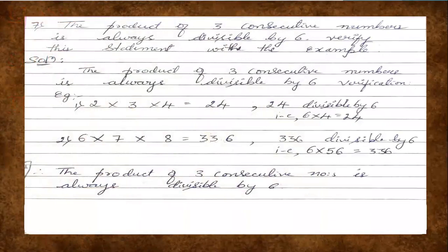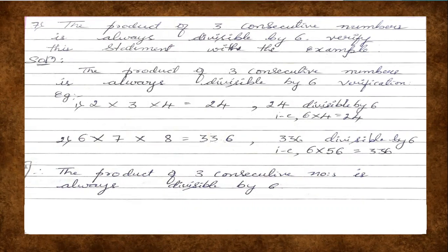The product of three consecutive numbers is always divisible by 6. Verify this statement with an example. So here it is given that the product of three consecutive numbers is always divisible by 6. When you take three consecutive numbers and multiply them, the product is divisible by 6. We have to verify this statement with an example.